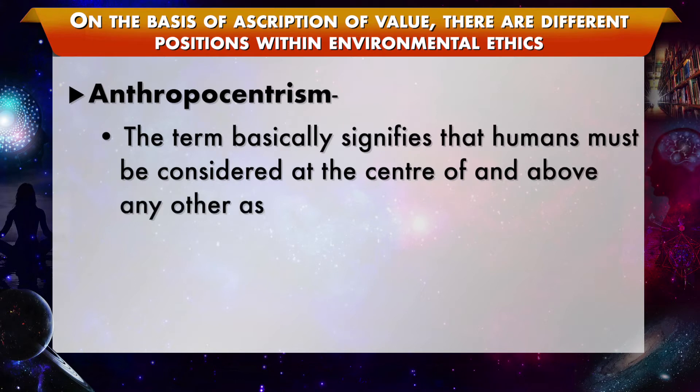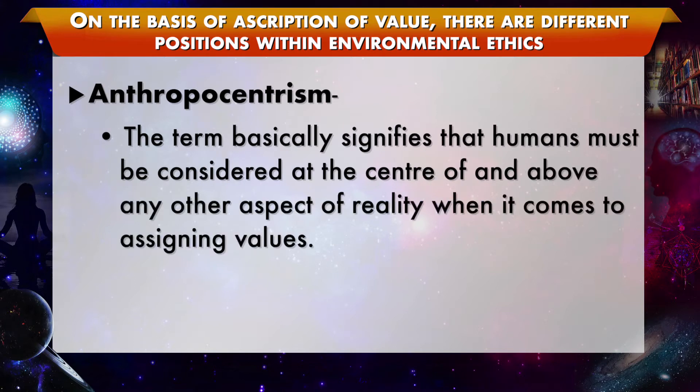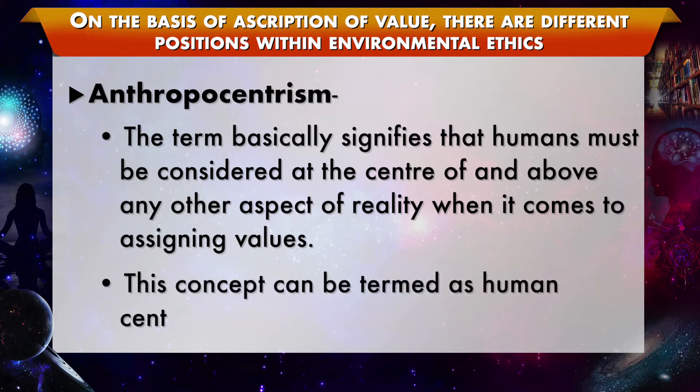The term anthropocentrism basically signifies that humans must be considered at the centre of and above any other aspect of reality when it comes to assigning values. This concept can be termed as human centricism or human supremacy. This anthropocentric view is considered to be the central problem for all present environmental issues in the world today. The use of the word dominion in Genesis, where God gives man dominion over all creatures, is controversial. John Passmore's 'Man's Responsibility Towards Nature' has been severely criticised by defenders of deep ecology.